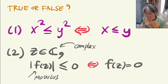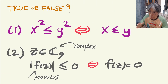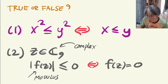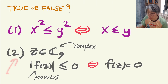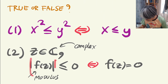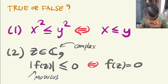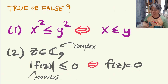Now let's check your understanding. I have two statements — I don't yet know if each is true or false. The first is: x squared is less than y squared if and only if x is less than y. Is it true? The second: z is a complex number and you have some function of z. The modulus of that function is less than or equal to zero if and only if that function value itself equals zero. Please leave your answer in the comments below.